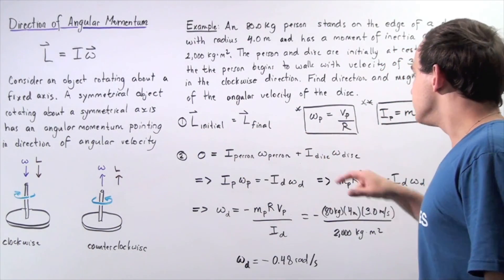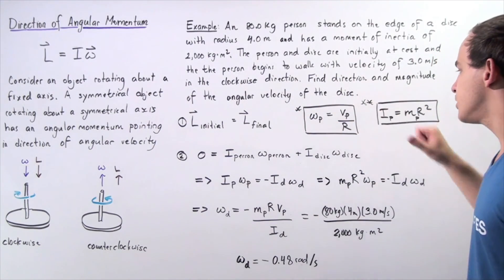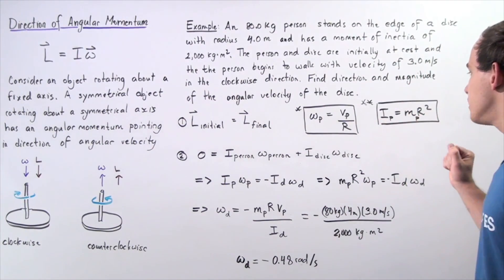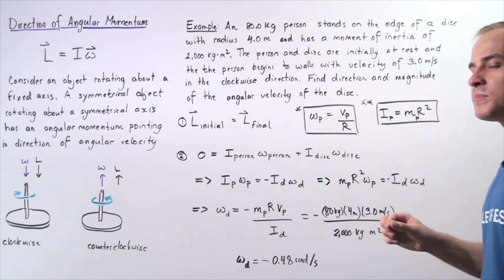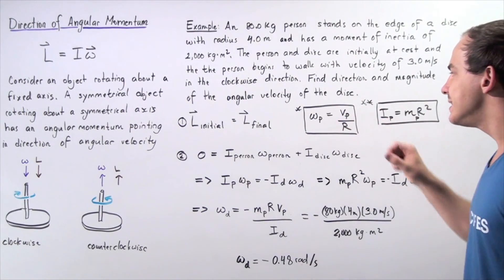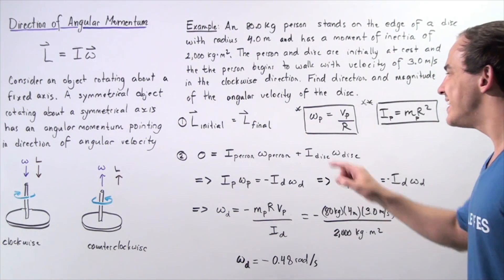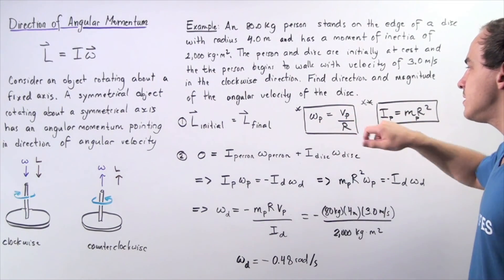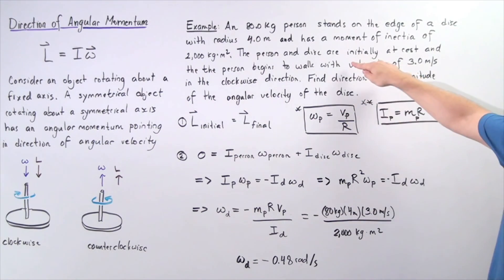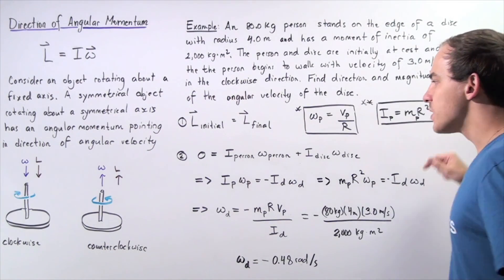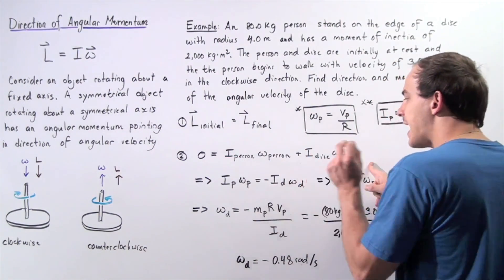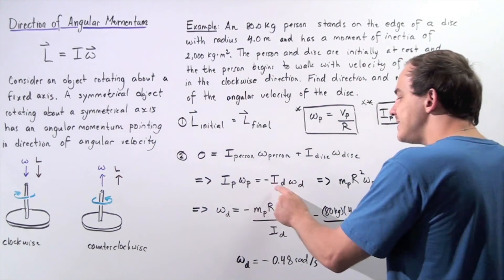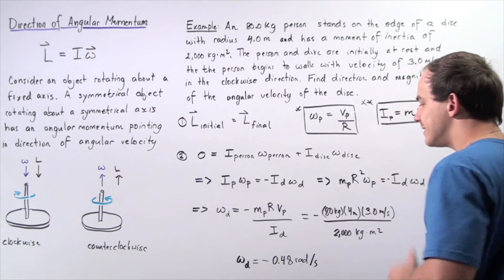Before we go on, let's look at two equations we'll need. We assume the moment of inertia of the person is given by Ip = mp · r². And we use this formula to represent the angular velocity of the person in terms of linear velocity and radius: omega_p = Vp / r, where Vp is 3 meters per second. We take the conservation equation and bring the angular momentum of the disk to the left side, giving us: Ip · omega_p = −Id · omega_d, where P is the person and d is the disk.